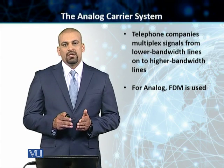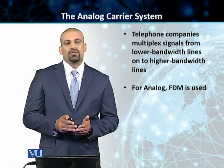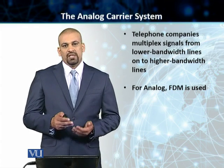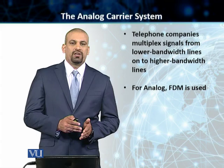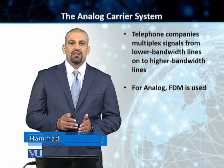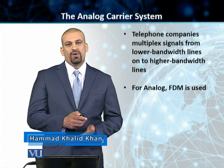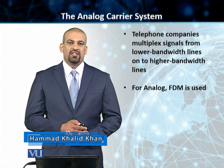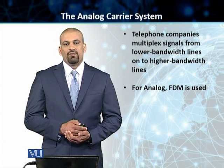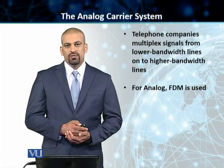Telephone companies, for their analog signals, they routinely use frequency division multiplexing. This FDM, in the case of analog telephone signals, is used to combine the low bandwidth analog signals onto the high bandwidth links in the case of our telephone systems. We'll go on to a slide and we'll look at one of these analog hierarchies that is in common use today.